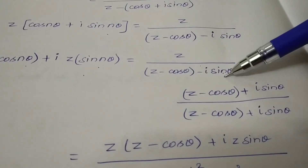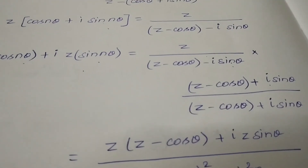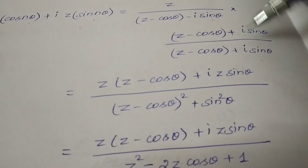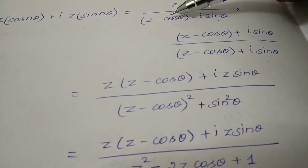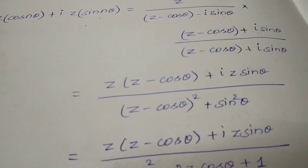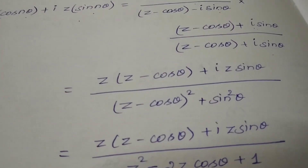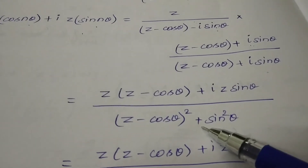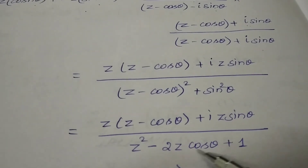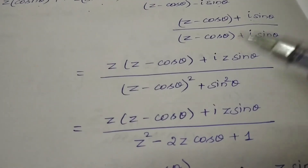Multiply and divide by (z - cos(θ)) with appropriate sign. The denominator becomes z² - 2z·cos(θ) + cos²(θ) + sin²(θ), and since cos²(θ) + sin²(θ) = 1, the denominator simplifies to z² - 2z·cos(θ) + 1. Expand the numerator and equate real and imaginary parts to obtain Z{cos(nθ)} and Z{sin(nθ)}.